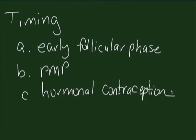Timing should be done in the early follicular phase, days 5 through 10, if the patient is not using any hormonal contraception. If the patient is postmenopausal or is on hormonal contraception, then the procedure can be done at any time during the cycle.